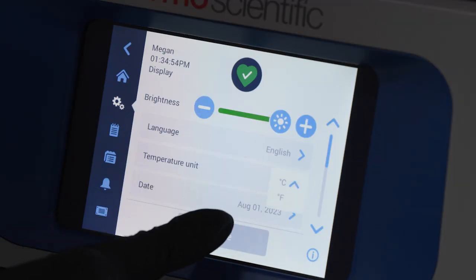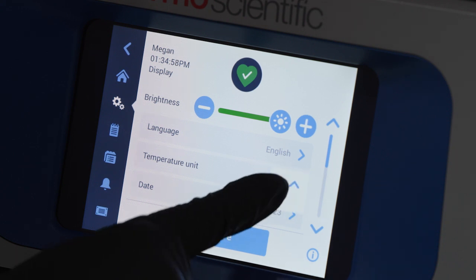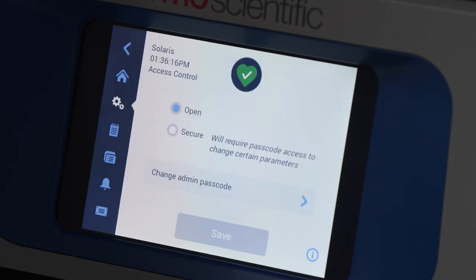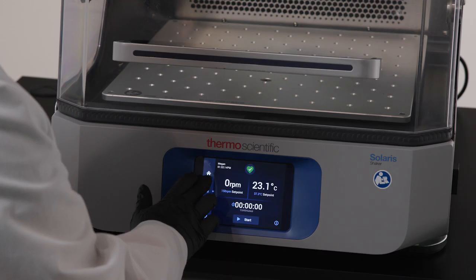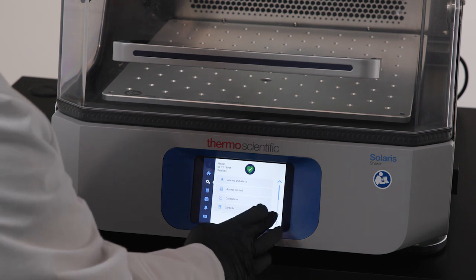You can also choose to display temperature in Celsius or Fahrenheit, personalize the thresholds for your unit's alarms and alerts, and set up the secure mode administrator features and passcode. These settings are adjustable and can be changed later by accessing the settings screen on your display.